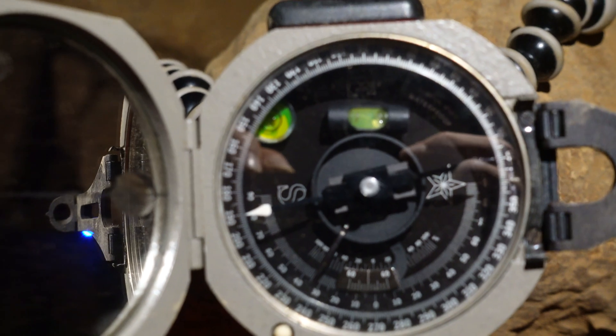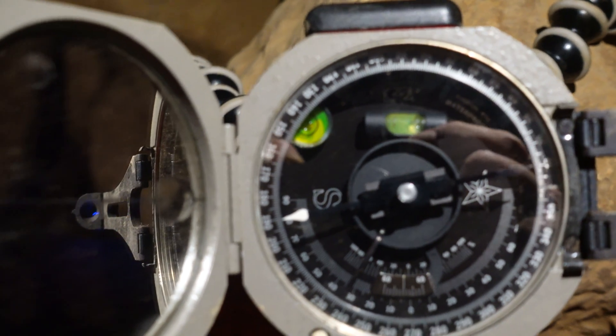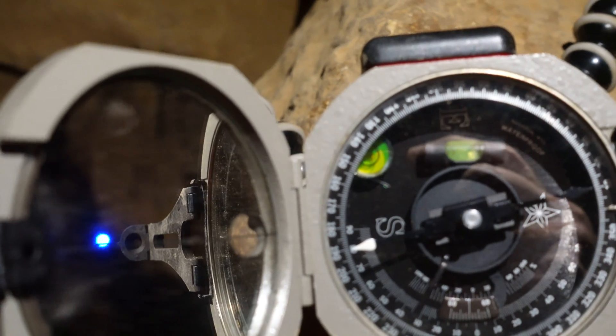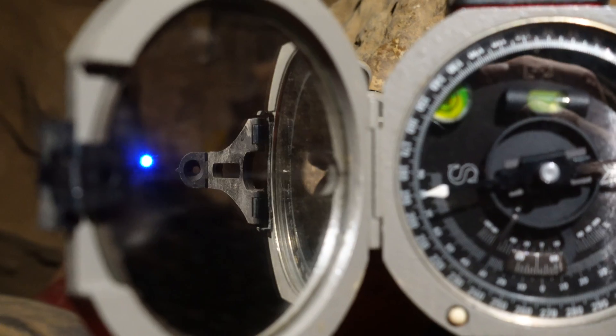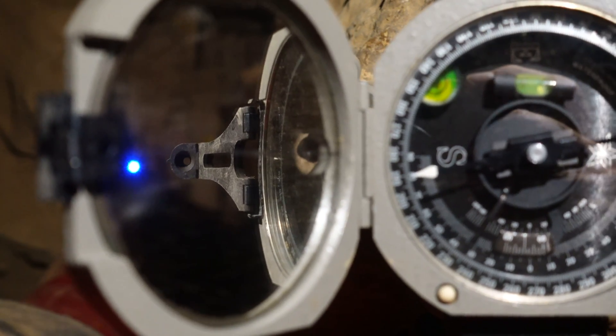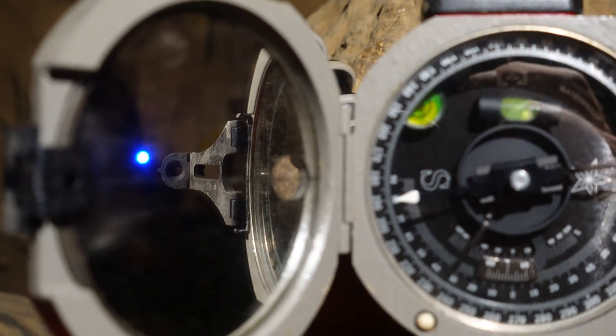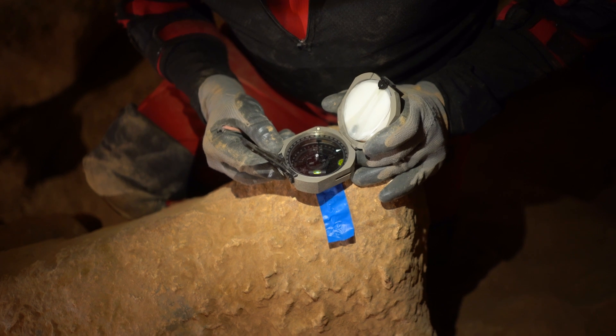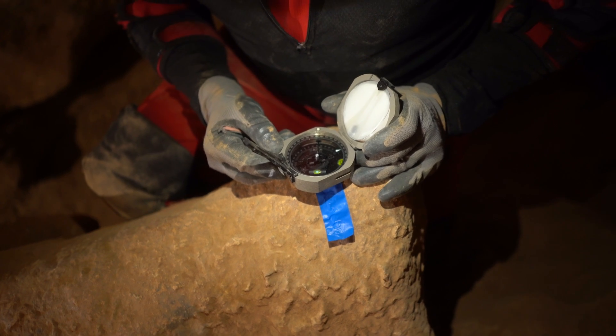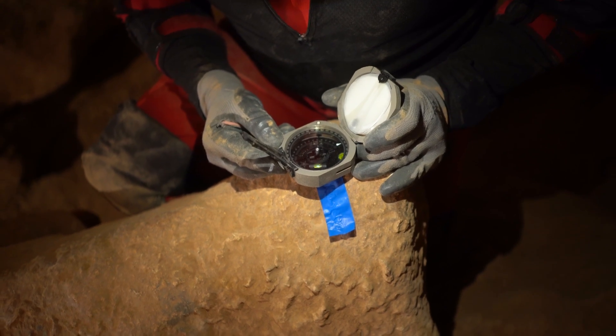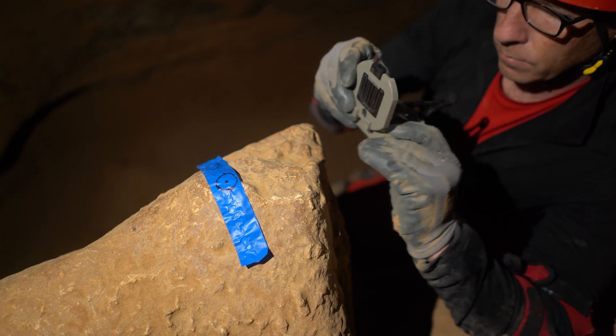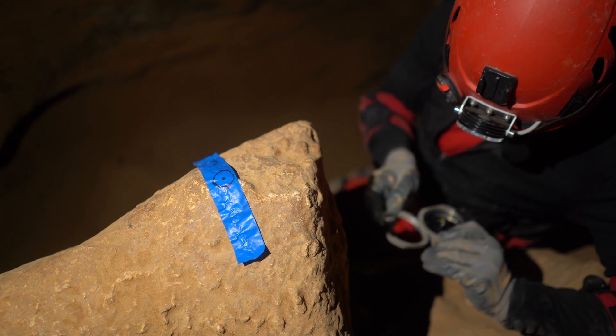Some of the difficulty in taking readings with the Brunton pocket transit is due to the need to simultaneously align multiple sights with the target while also paying attention to getting the instrument level and then taking a reading. For some of the reading configurations, you're trying to look at three different things simultaneously, which is why keeping the instrument stable is so important. For this reason, many cavers use a small non-magnetic tripod, or they mount the pocket transit to a plexiglass or aluminum baseplate so they can keep the instrument from moving while they switch their focus from alignment to leveling to reading.